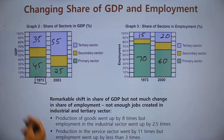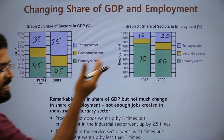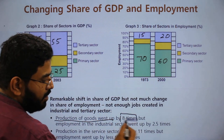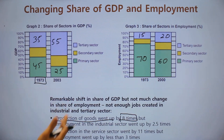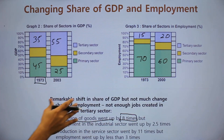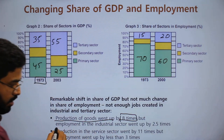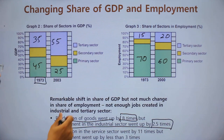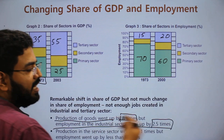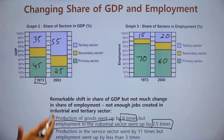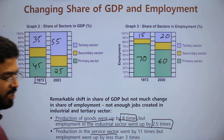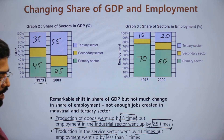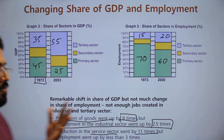This can be seen clearly in the facts: production of goods went up eight times in the manufacturing sector (secondary sector), but employment went up by just 2.5 times. Similarly, in the service sector (tertiary sector), production has gone up 11 times but employment has gone up only three times.